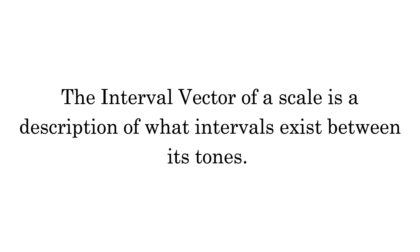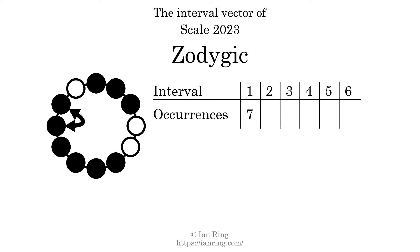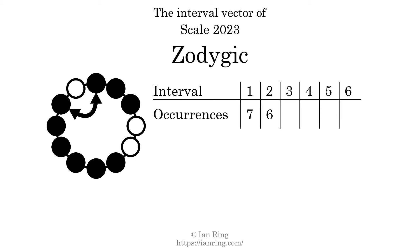The interval vector of a scale is a description of what intervals exist between its tones. There are 7 intervals with the size of 1 semitone. There are 6 intervals with the size of 2 semitones. There are 6 intervals with the size of 3 semitones.